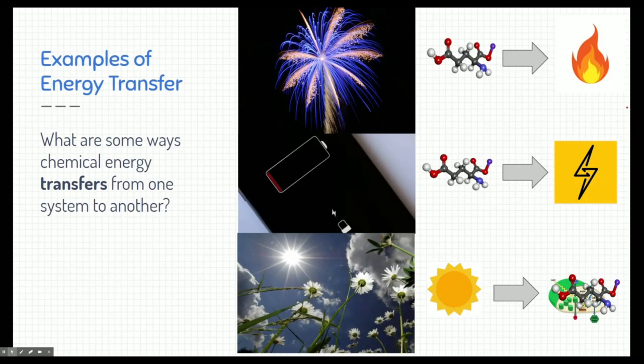Here are three examples of energy transfer. First, a firework: before it's lit off, it's a tube full of gunpowder and salts, with energy stored in the chemical bonds. The moment we light it off and it explodes, it releases that energy — typically in the form of heat and light. That's one way energy is transferred from one form to another.